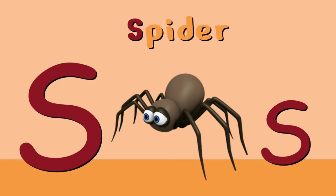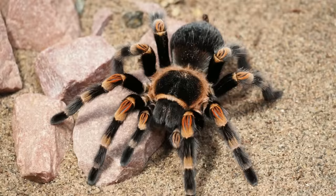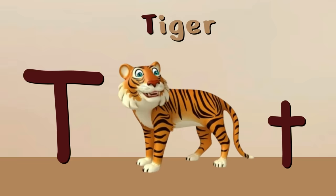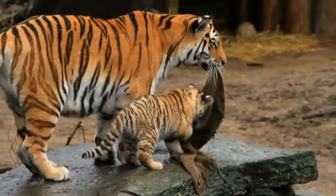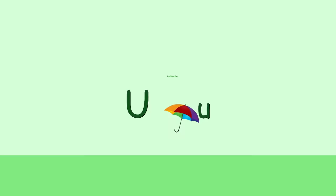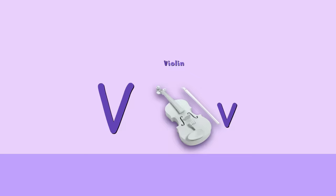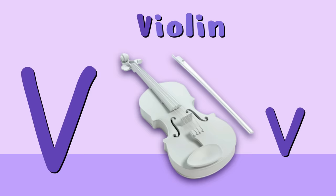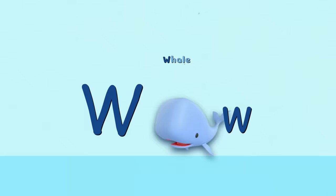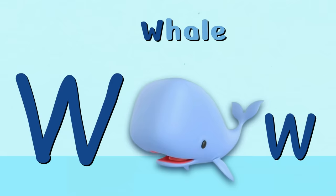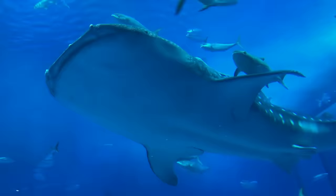S is for Spider. S, S, Spider. S, Spider. T is for Tiger. T, T, Tiger. T, Tiger. T. Tiger. U is for Umbrella. V is for Violin. Violin.